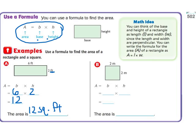Okay, B, area equals base times height. My base is 2. My height is 2. 2 times 2 is 4. So, the area is 4 square, and this time it's meters.